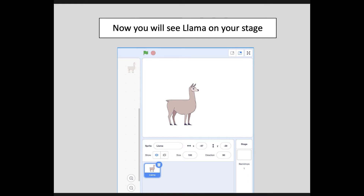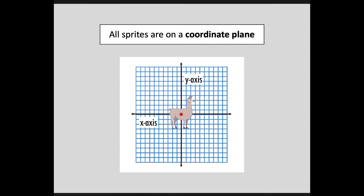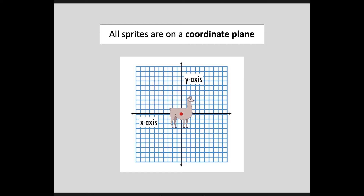Now you will see your sprite on your stage. All of our sprites are on a coordinate plane. The line that goes up and down is the Y axis and the line that goes left to right is the X axis. Every position that your sprite takes has a number value. Right now my Llama is in the very center where those two lines intersect, so his coordinate position is zero comma zero. If he moves up, his Y value goes positive; if he moves down, it goes negative. Similarly, moving left gives a negative X value and moving right gives a positive number.